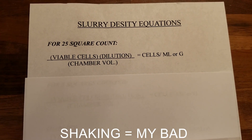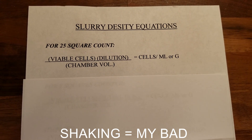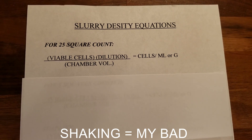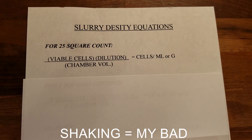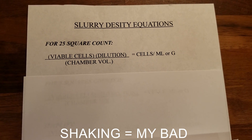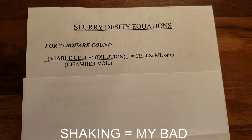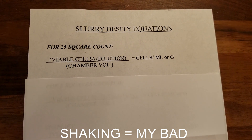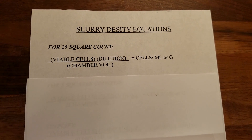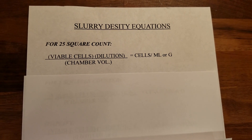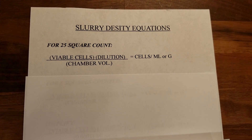For the slurry density equations we need to make a couple of assumptions. First, I assume that you know how to collect, dilute, and count your yeast with a hemocytometer. I did a video in the past about getting a correct dilution and there are plenty of videos online about how to count with a hemocytometer, so go check those out if you're a little iffy on that. I'm also assuming that you know how to count your viability and identify a live cell versus a dead cell.